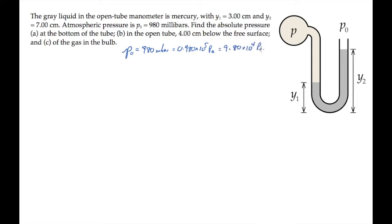Part A of this problem asks us to find the pressure at the bottom of the tube. That's the pressure right here. We'll label it p sub b, where the absolute pressure is the pressure at the top of the column, atmospheric pressure p0, plus rho g h, where rho is the density of the fluid, that's mercury, and h is 7 centimeters, the height below the reference level.